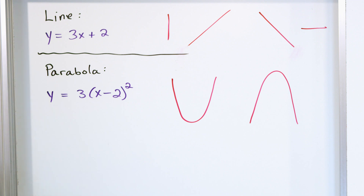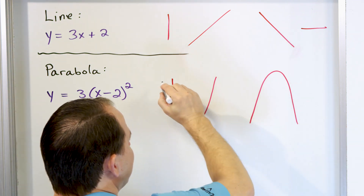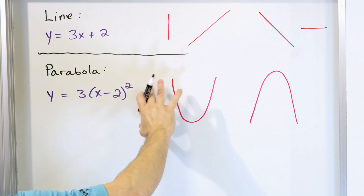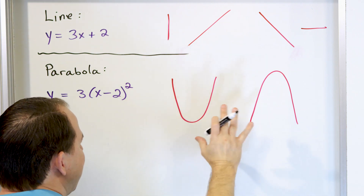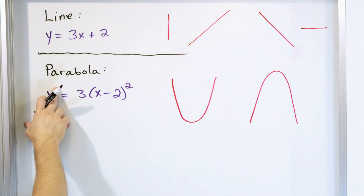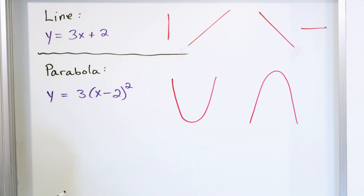When you graph parabolas, you might have one that opens upward like a smiley face, or one that opens downward like a frowny face. Those are the shapes of parabolas we care about. We can also have parabolas opening left and right — that's when the y term is squared but the x term is not. We've studied those in the past as well.